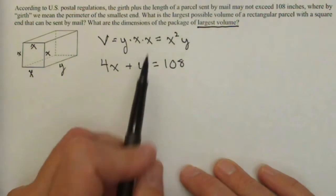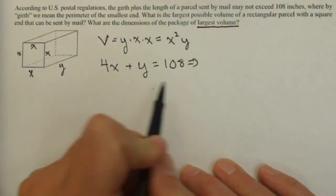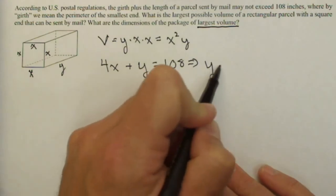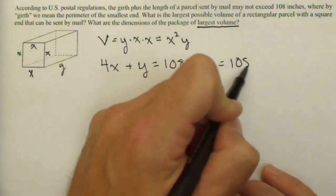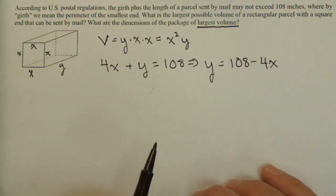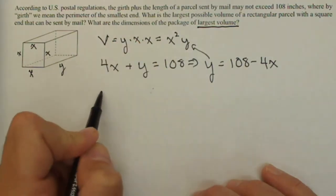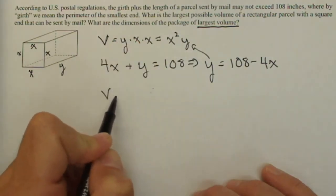Now what we're going to do is use our constraint to get our volume in terms of one variable. So I'm going to go ahead and solve my constraint. I'm going to solve it for y. You could solve it for x just as easily. 108 minus 4x.